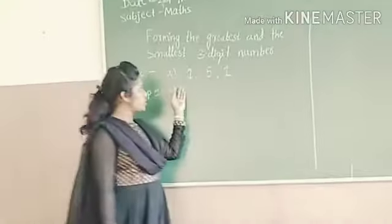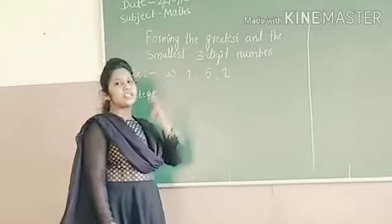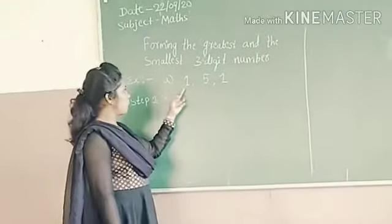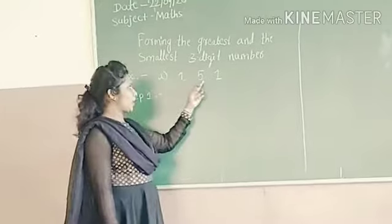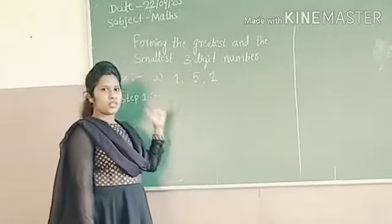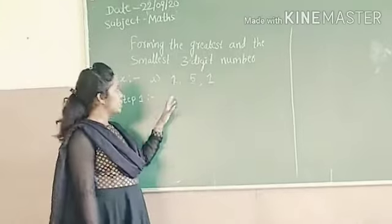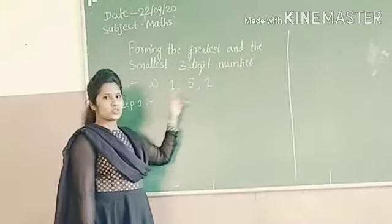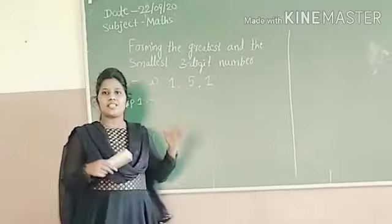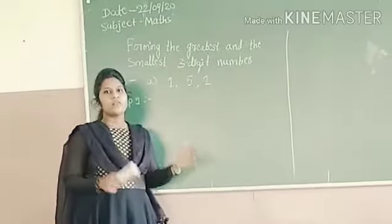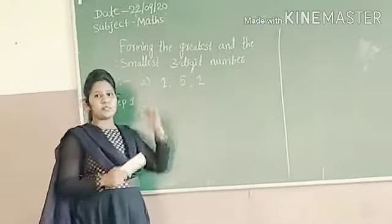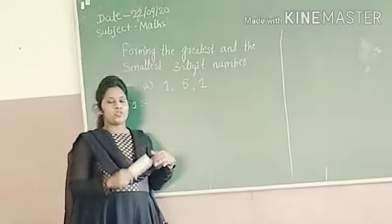See here students, here they have given 3 digits. The given digits are 1, 5, 1. To form the greatest number, first we have to rearrange these numbers in descending order.